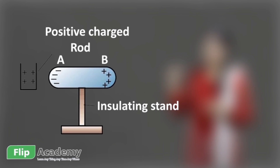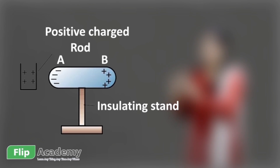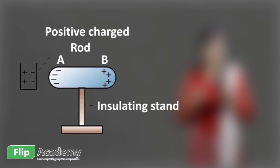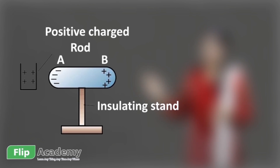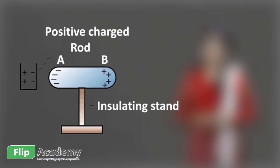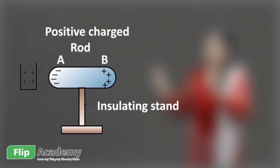Side B then contains positive charge, because the positive charges are repelled by the positive charges of the glass rod, so they move towards side B. In the conductor, the charges are now aligned in a particular direction — side A acquires negative charge and side B acquires positive charge. This is called the redistribution of electric charges, done under the influence of the charged body (the glass rod). This phenomenon is called electrostatic induction.